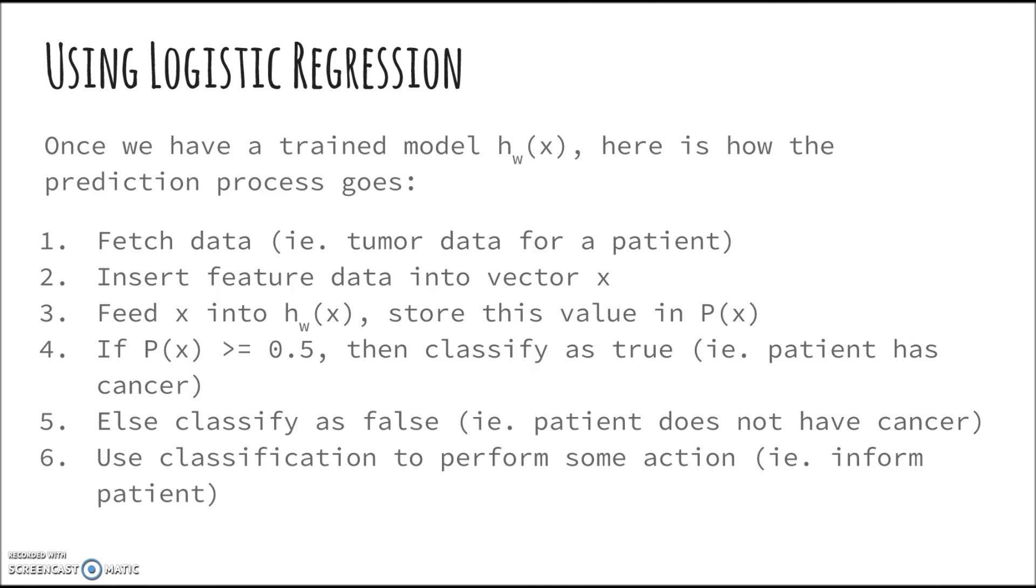Now, once we have a trained model h(x), here is how the prediction process goes. First, we fetch the data. Then we insert feature data into the vector x. Then we feed x into h(x), store this value in P(x). If P(x) is greater than or equal to 0.5, then we classify it as true, else we classify it as false. We use classification to perform some final action.